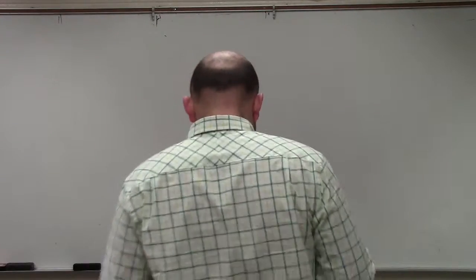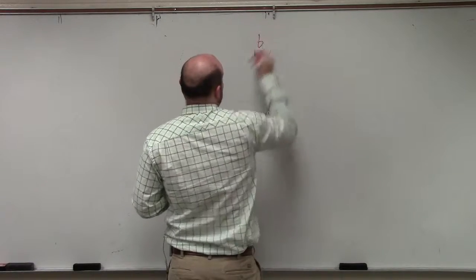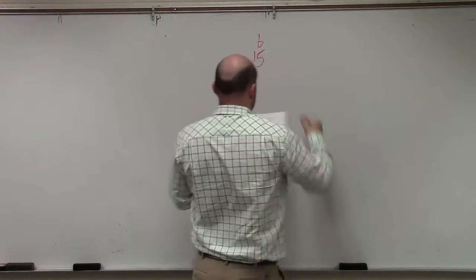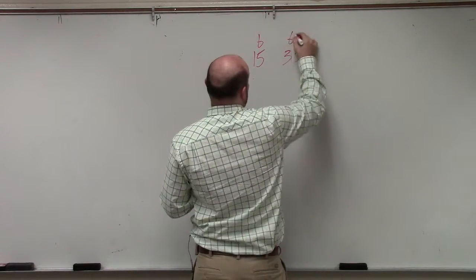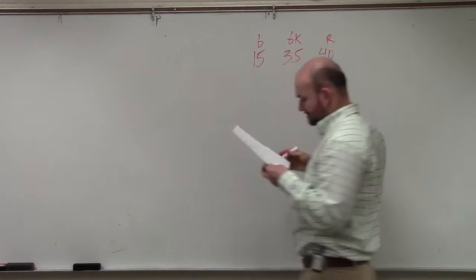For the next example, it says a bucket contains 15 pens. So we have 15 blue pens, 35 black pens, and we have 40 red pens.